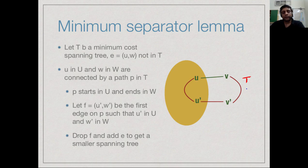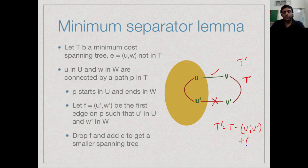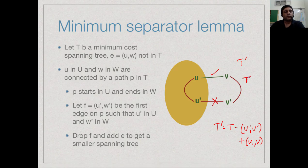If we take tree T, remove edge U-prime V-prime and replace it with edge UV, we get a new tree T-prime. Since UV was the smallest edge crossing the partition, its weight is strictly less than that of U-prime V-prime. Therefore T-prime has strictly smaller weight than T, and all vertices remain connected. So T-prime is a valid spanning tree of smaller cost, contradicting that T was a minimum cost spanning tree.